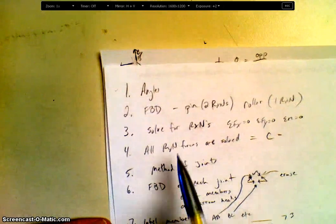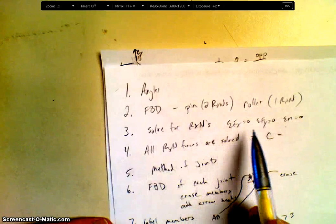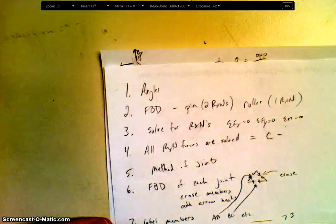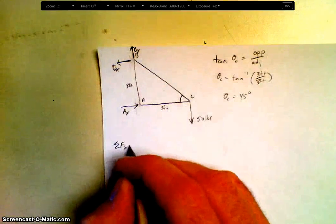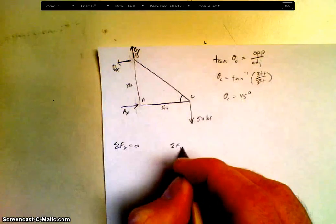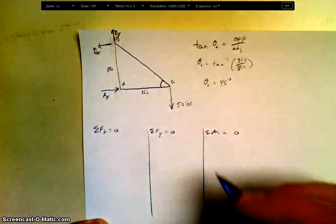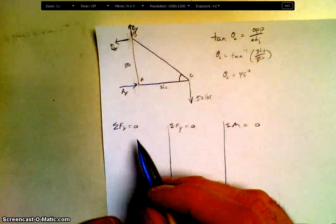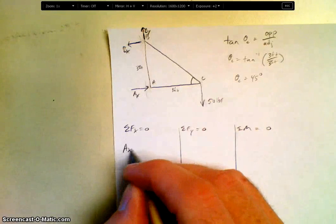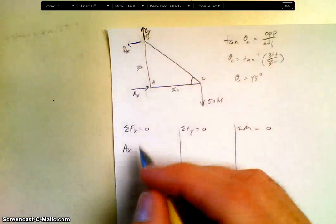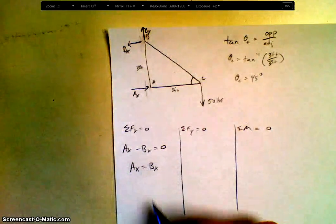Let's look at our next step. We're going to solve for our reactions using our three equations for static equilibrium. So sum of the forces in the X, sum of the forces in Y, and sum of the moments all equal to zero. So let's set those three equations up. So what forces in the X direction? We've got a positive AX and a negative BX. Can I go any further? Move on.